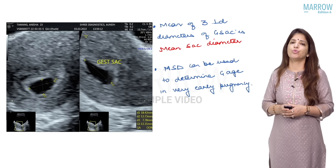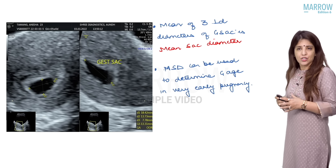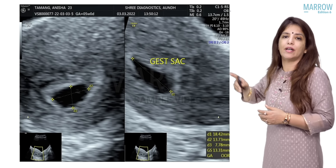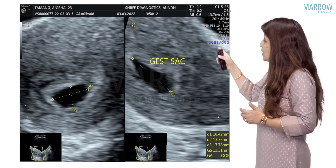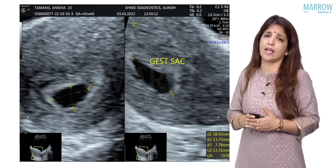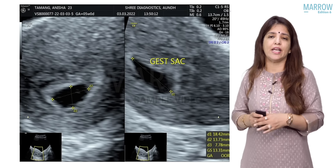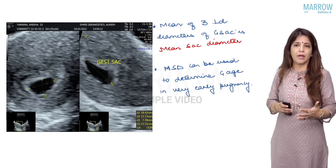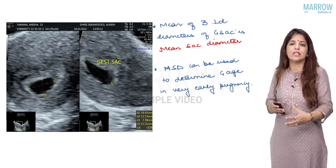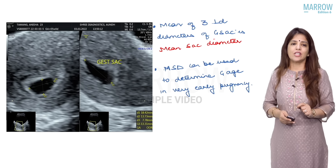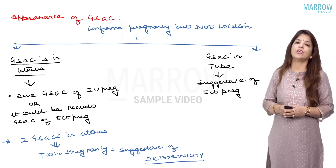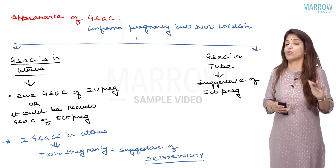Going back to the gestational sac: when we see a gestational sac, we take the mean of three perpendicular diameters of the gestational sac, which is called the mean sac diameter. This mean sac diameter can be used to determine gestational age in very early pregnancy. Gestational sac is the first structure you see in pregnancy, but it confirms pregnancy without confirming the location.